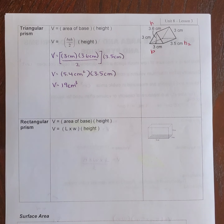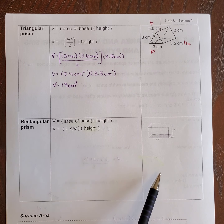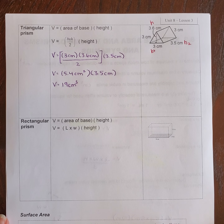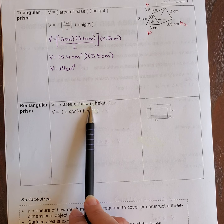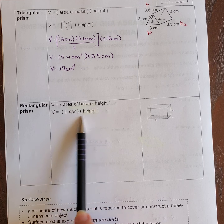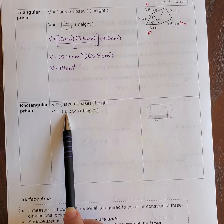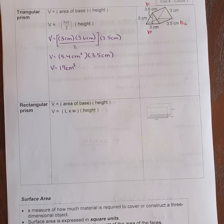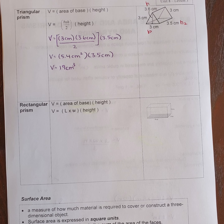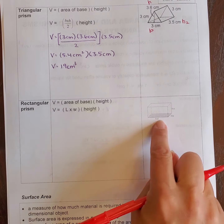Now we're going to do the volume of a rectangular prism. The formula is area of the base times the height, where the area of the base is length times width, then multiplied by the height. I'll go to the diagram and label my variables so I know where to plug them in.